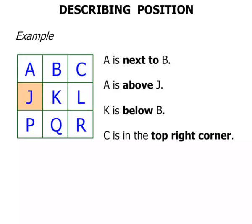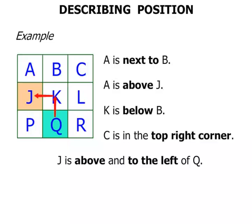Now what about J compared to the letter Q? We can say that J is above and to the left of Q. So let's look at Q again. We would go up and to the left. So we say that J is above and to the left of Q.